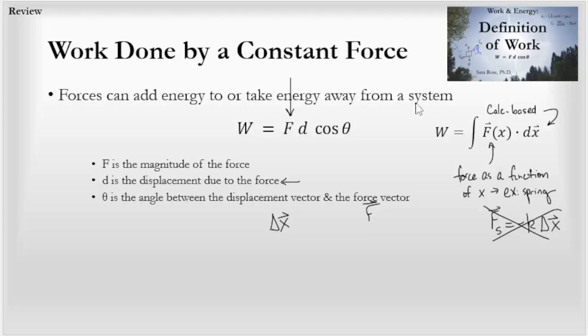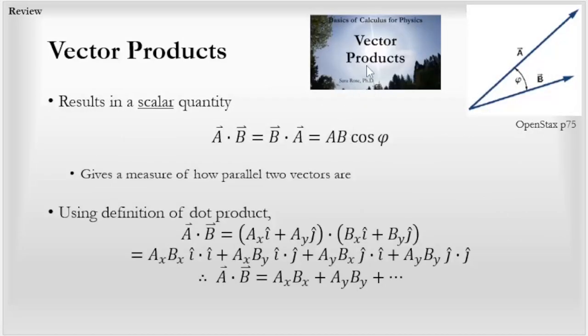Just to review a little bit, I did a video on vector products. You may want to go back and look at vector products and how to do a dot product. It is A·B times cosine of the angle between them, the magnitude of the two vectors and the angle between them.